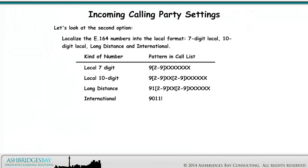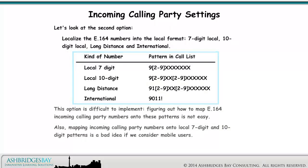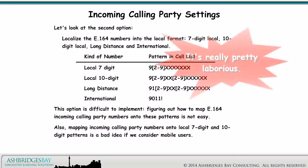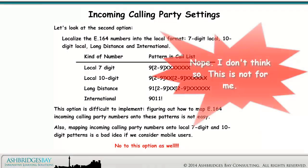Option 2: localize the E.164 numbers into local formats — 7-digit local, 10-digit local, long distance, and international. This option is difficult to implement. Figuring out how to map E.164 incoming calling party numbers onto these patterns is not easy. Also, mapping incoming calling party numbers onto local 7-digit and 10-digit patterns is a bad idea when considering mobile users. No to this option as well.